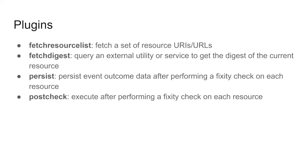There are four kinds of plugins. Fetch Resource List is a piece of code that tells RIPRAP where to get the next set of resource locations — either URIs, URLs, or file system paths to check. Fetch Digest is a plugin that does the fixity check and gets the fixity value for the current resource. Persist is a plugin that stores the results of that fixity check in a database, CSV file, key-value store, or similar. Post-check plugins run after each fixity check — useful for things like sending an email to the administrator about a failure.